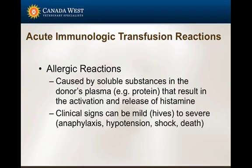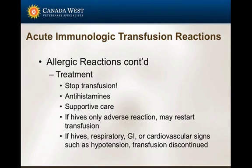An allergic reaction is caused by a substance in the donor's plasma — one of the common things is protein — and this causes an activation and release of histamine. You may see hives or urticaria, as you're probably familiar with from other allergic reactions. At the other end of the spectrum is severe anaphylaxis, signs of shock, and potentially death. Stop the transfusion if you observe anything, even little hives developing or small bumps. Antihistamines may be administered, along with supportive care.